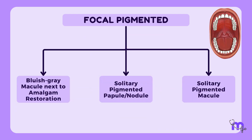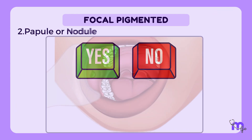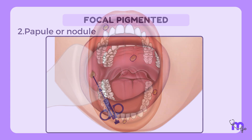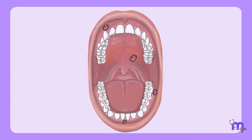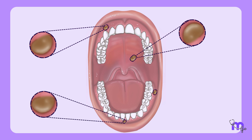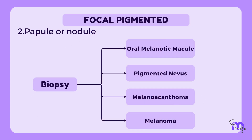If the answer to the second question is yes — meaning it's a solitary pigmented papule or nodule — a biopsy is typically recommended. It's important to note that these lesions can appear on the gingiva, palate, labial mucosa, or buccal mucosa. Following the biopsy, four main confirmed diagnoses are possible.